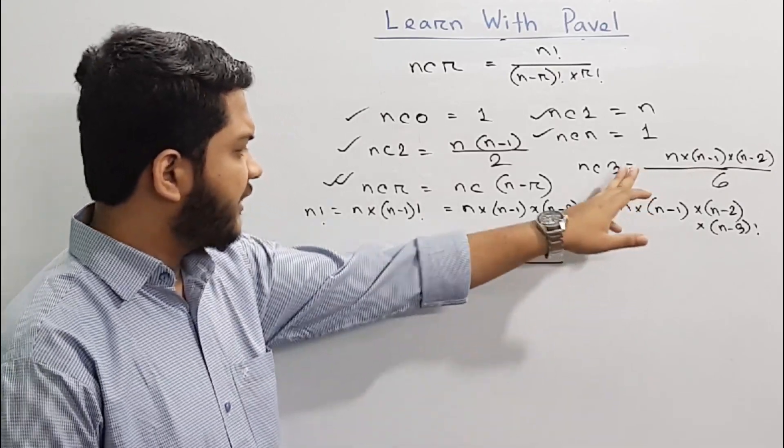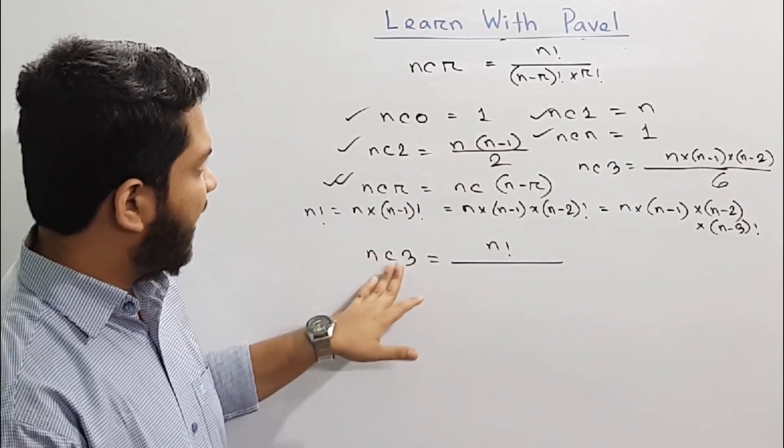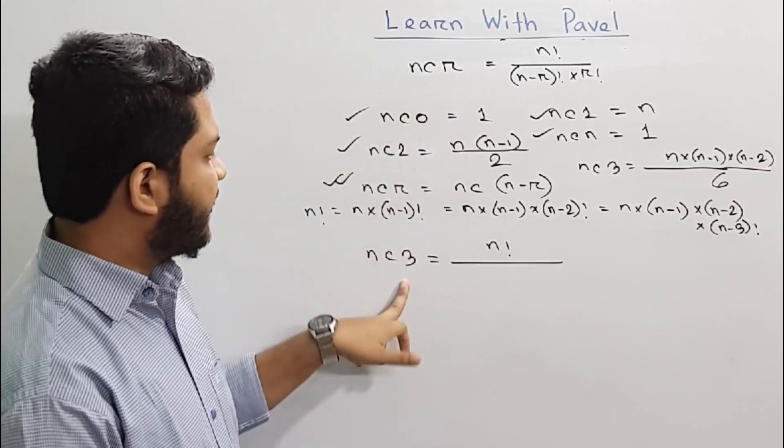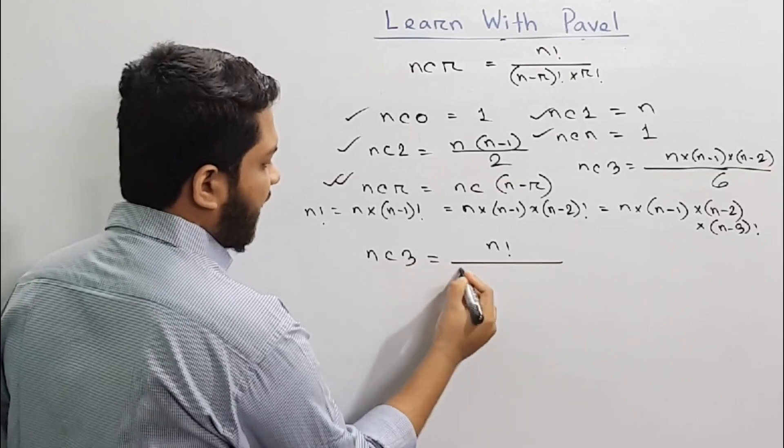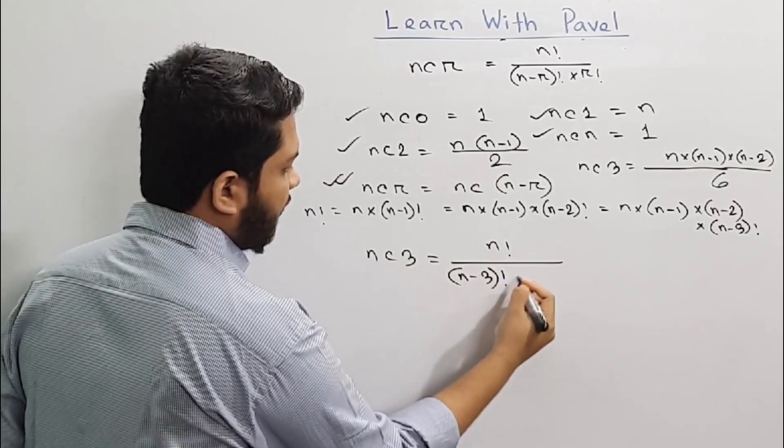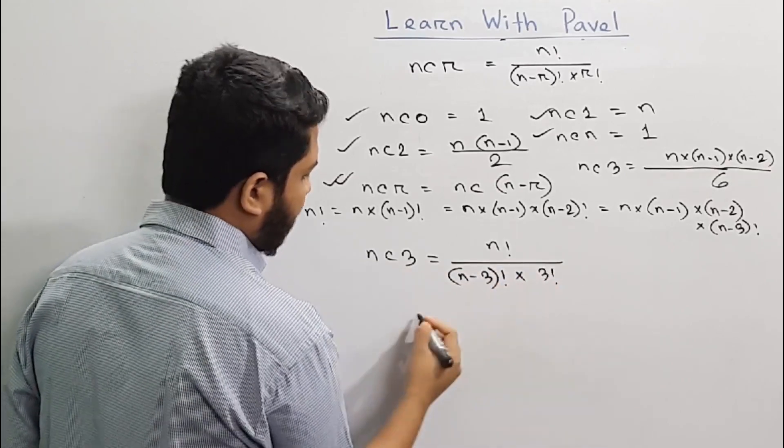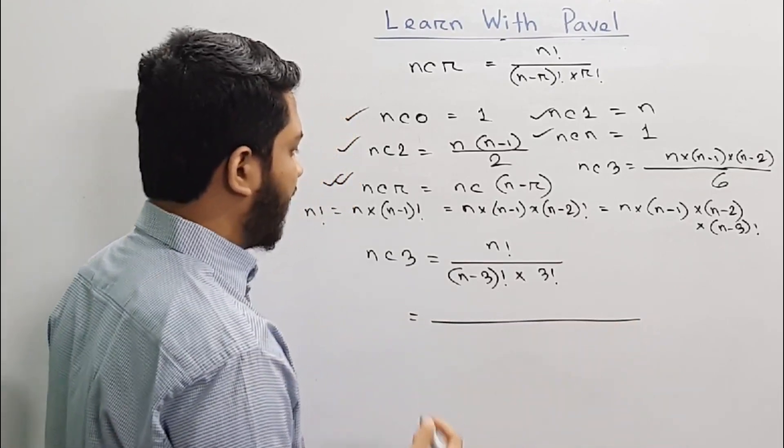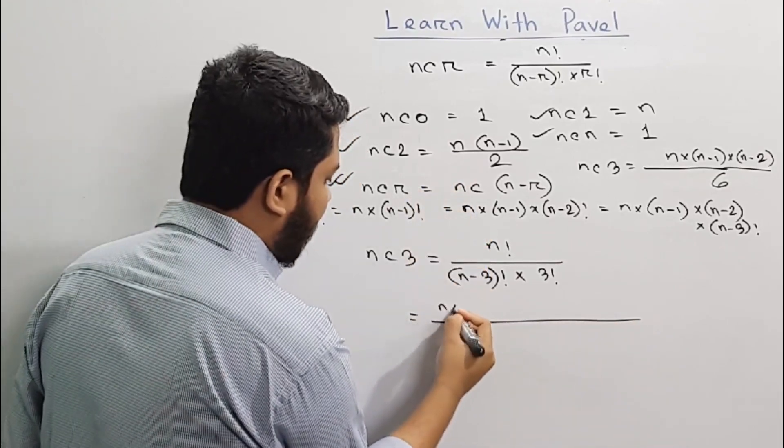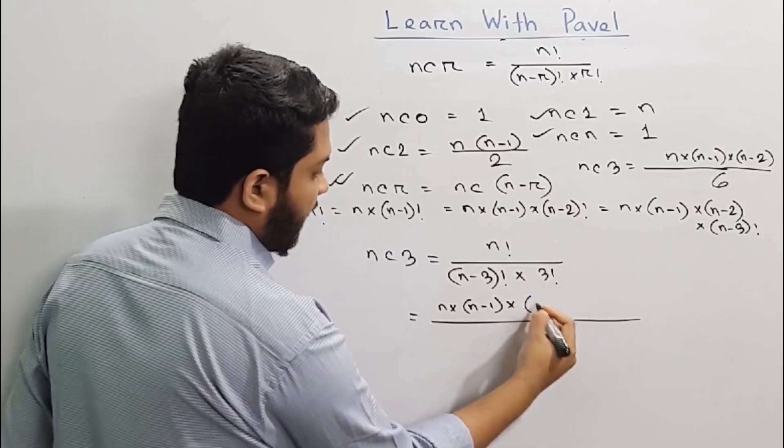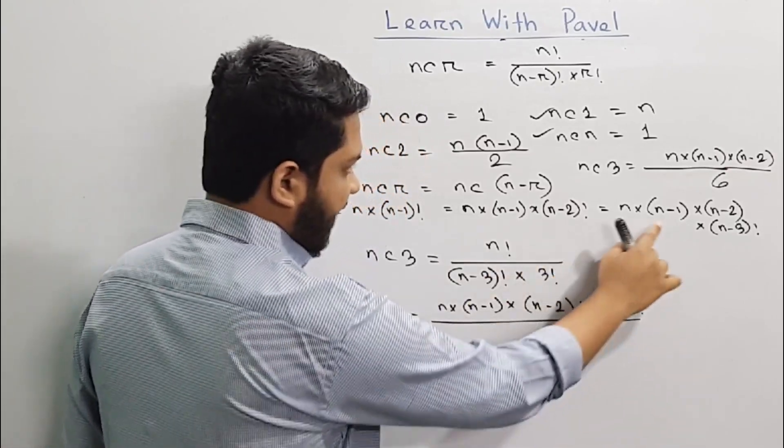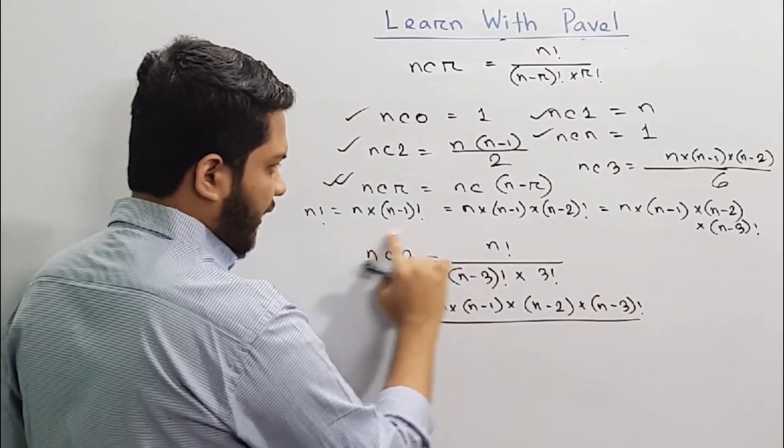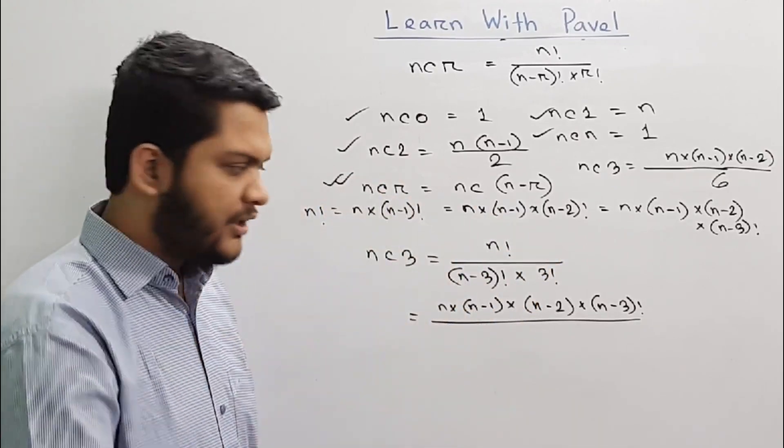So this formula is written as nC3. Where is the n factorial? The n factorial is going to be in the numerator. Now the n factorial will be the n factorial. Where is the right n factorial?